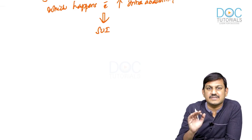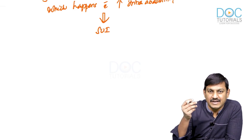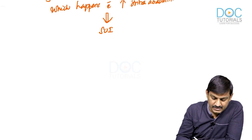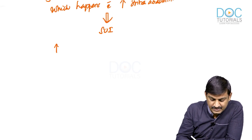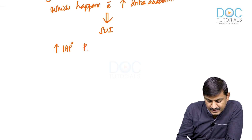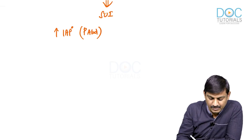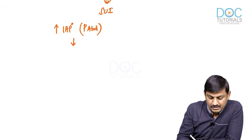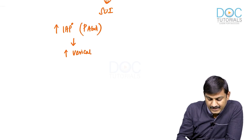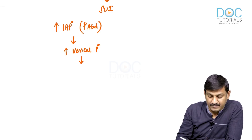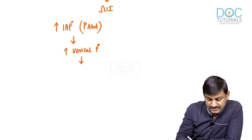Whenever a patient strains — for example, when straining to pass a motion or when lifting heavy objects — there is an increase in intra-abdominal pressure, that is P-abdominal increasing. This increase in intra-abdominal pressure is also transmitted to the bladder, increasing the intra-vesical pressure. Whenever the control mechanism is uncertain, the patient will develop urine leak.